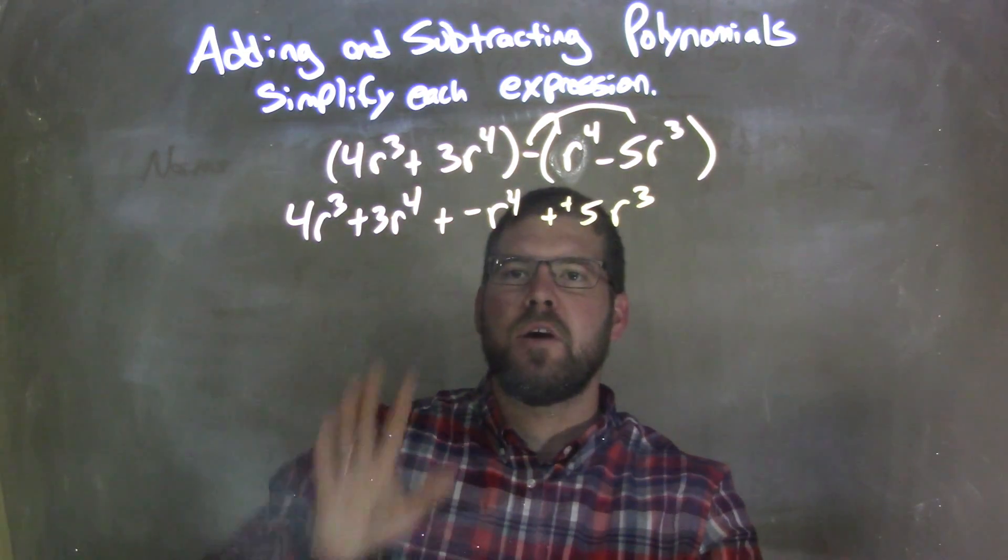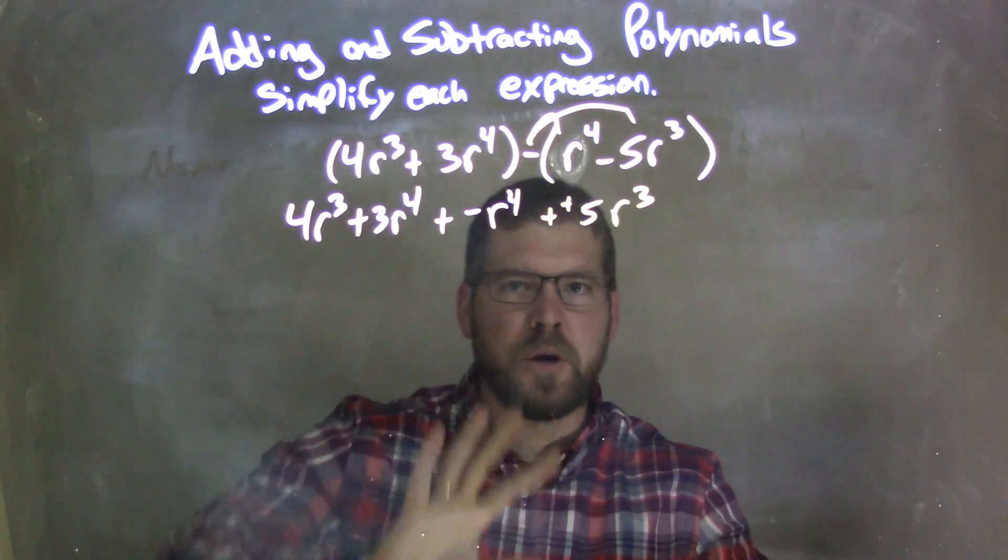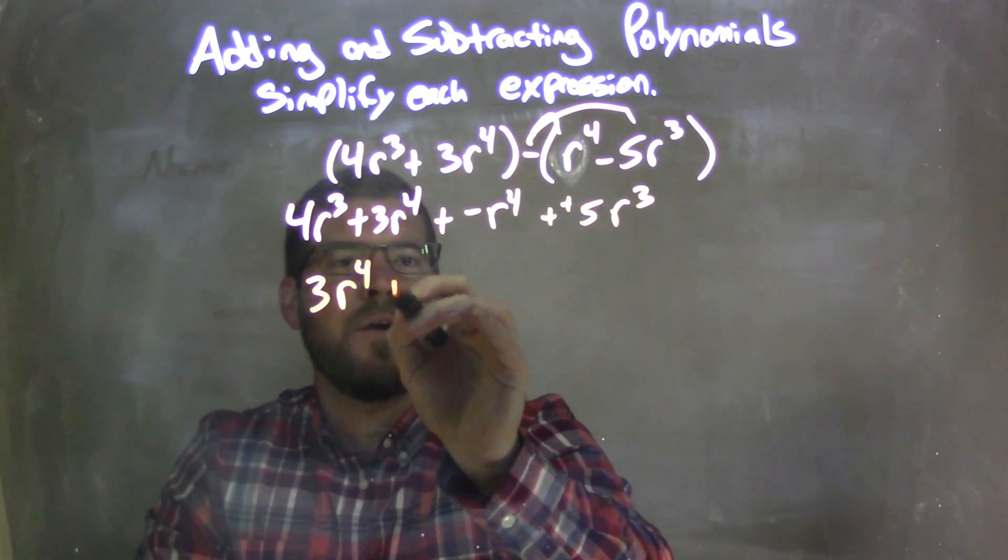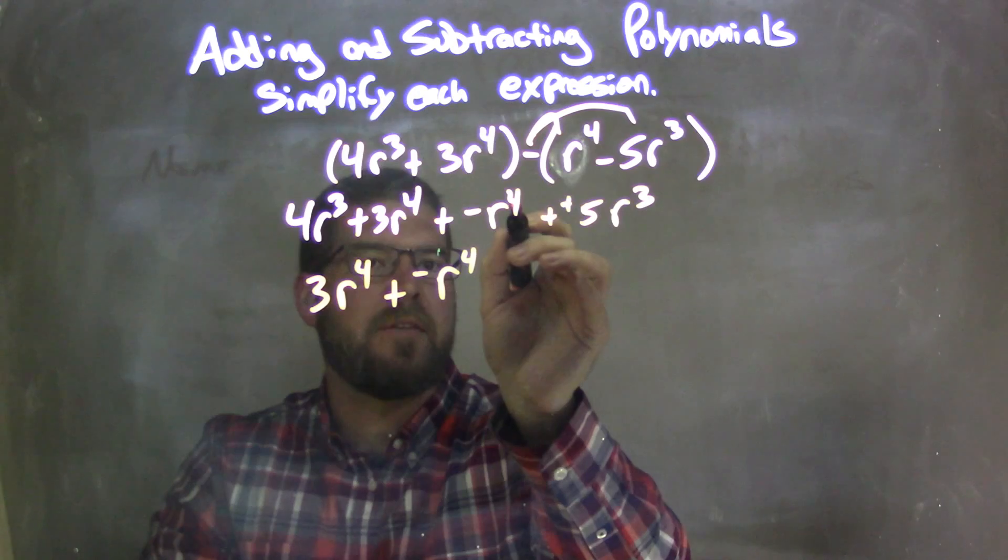Now I'm going to rearrange. There's a lot of 4s, a lot of 3s here. I'm going to rearrange with my highest degrees first. So, 3r⁴, that one right there, plus a negative r⁴. Got that other one, that's the 4th.